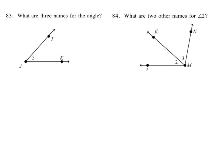Okay, what are three names for the angle in question 83? Well, you could call it angle 2 because it's got a number there. You can also call it angle J because there's only one angle coming off of it, which means that by saying angle J, naming the vertex point, there's no confusion about which angle you're talking about.